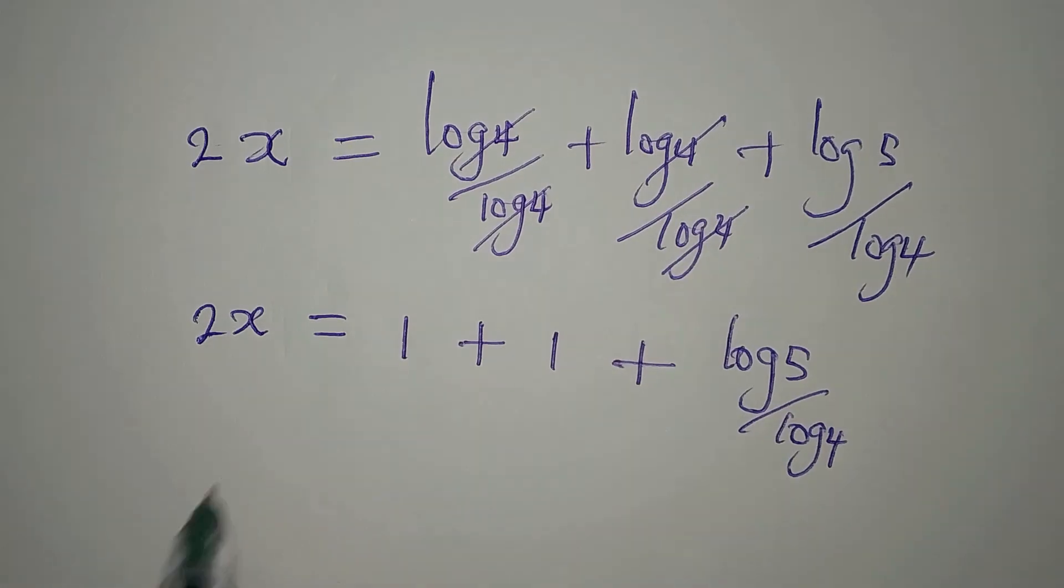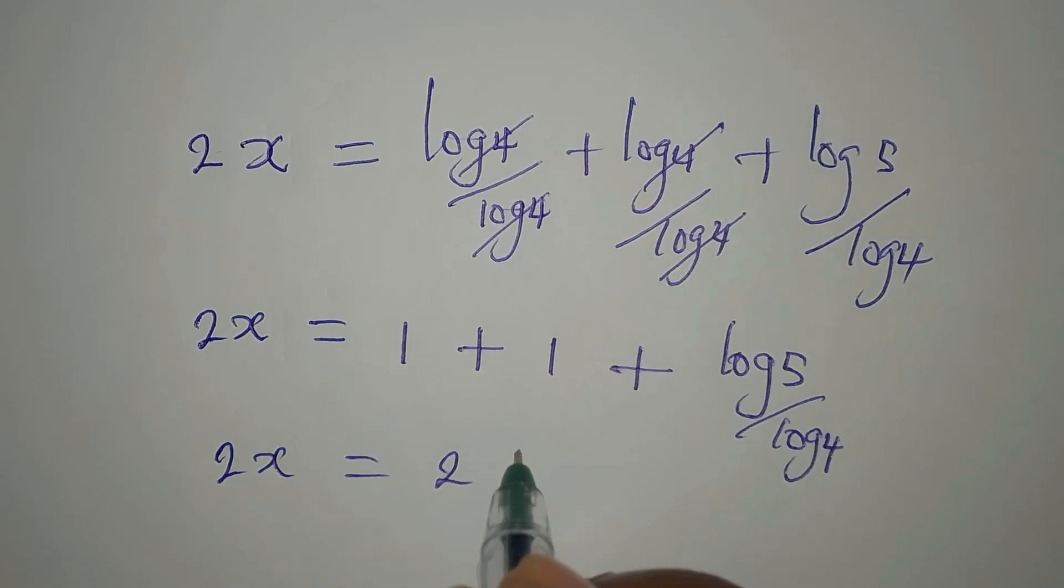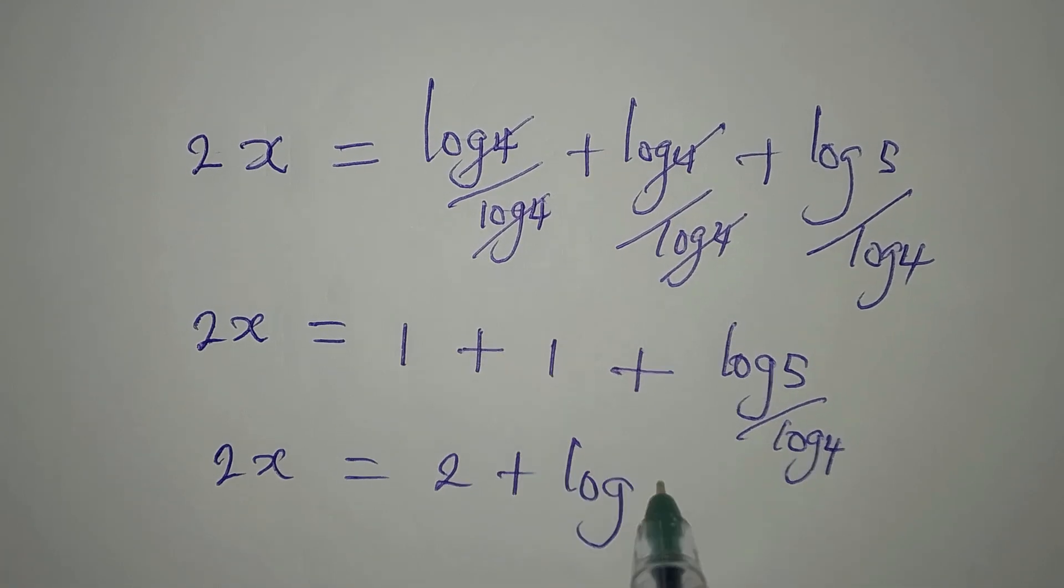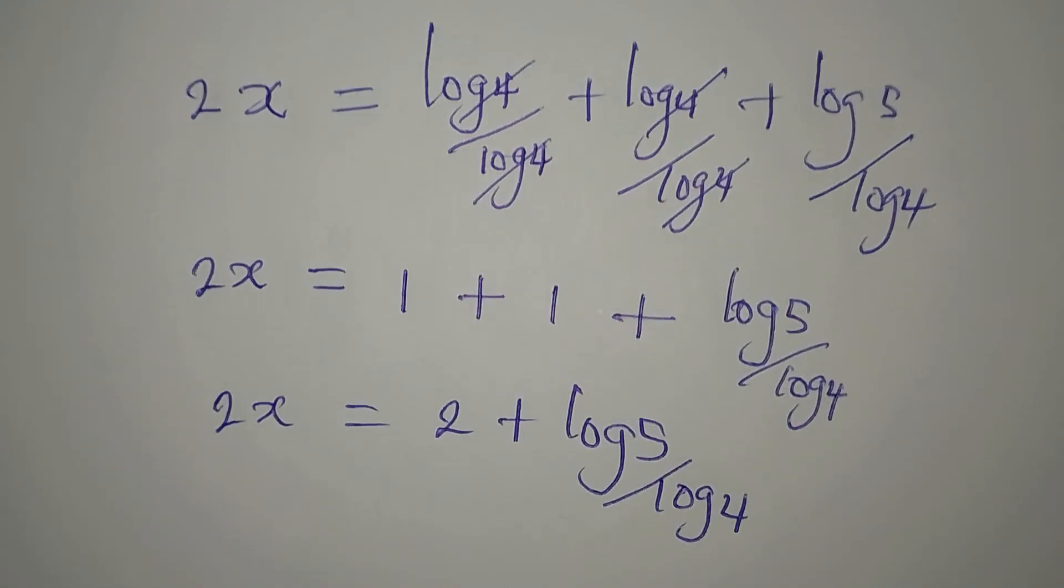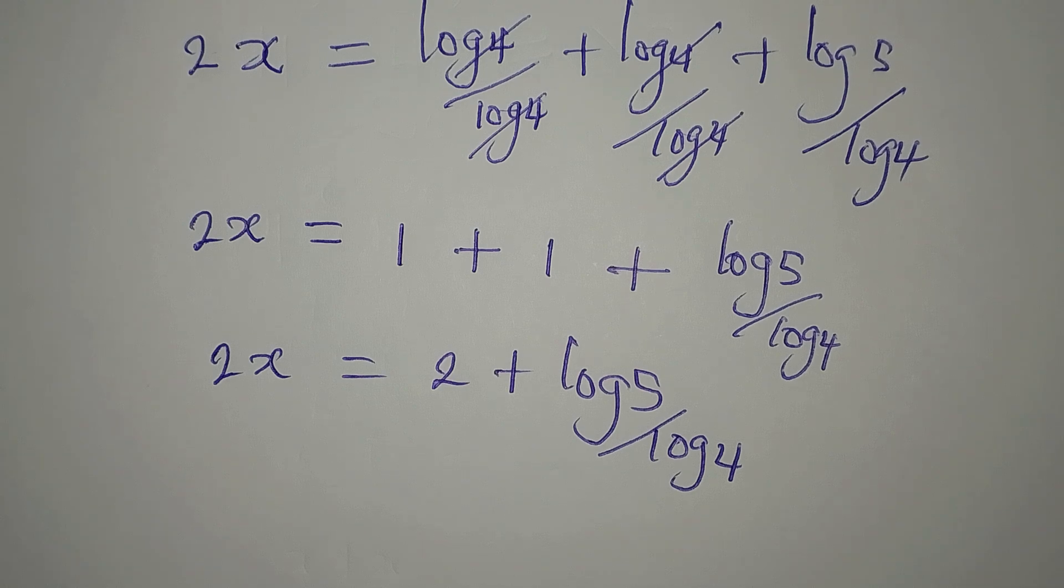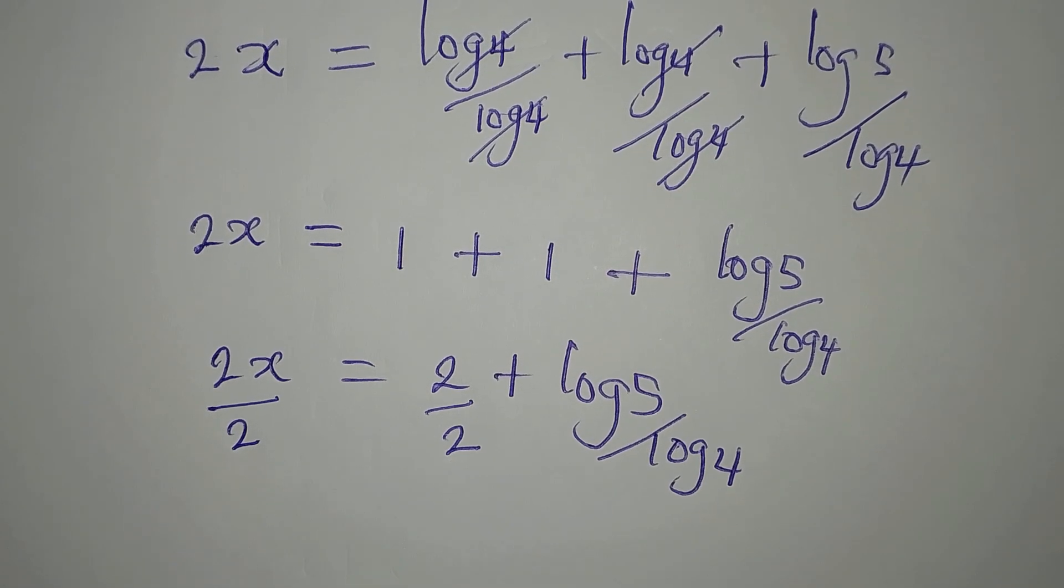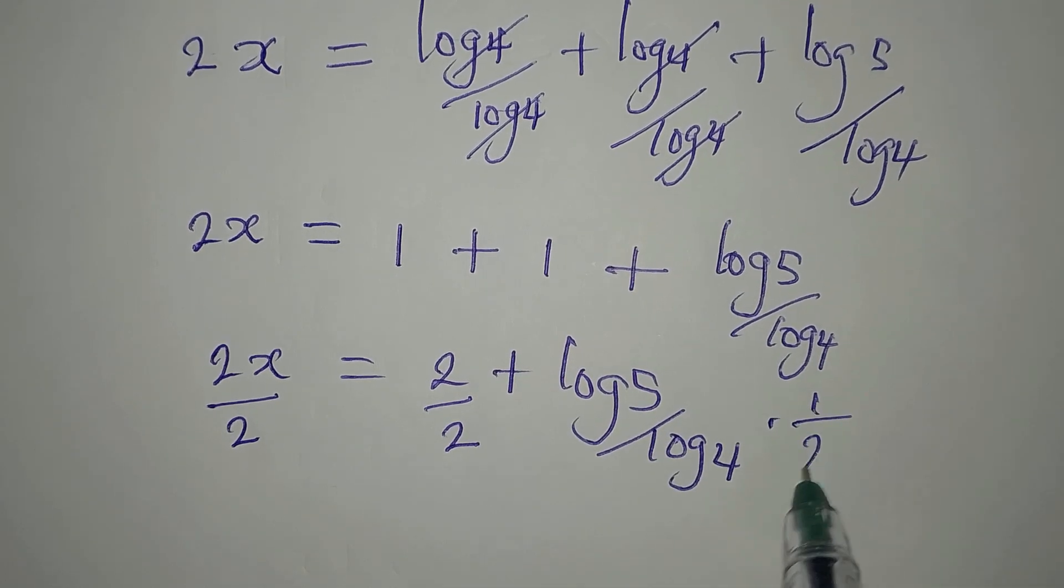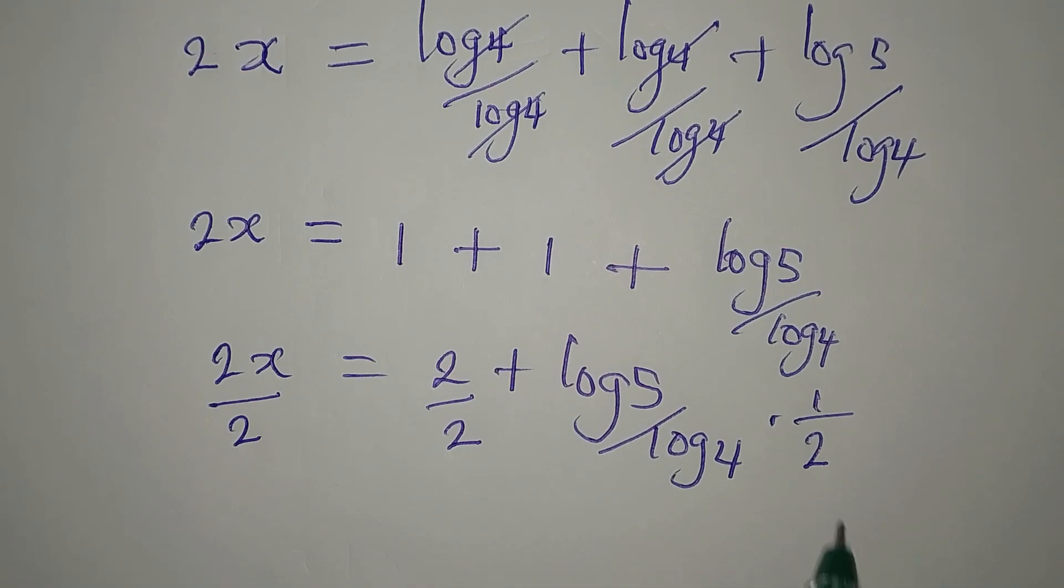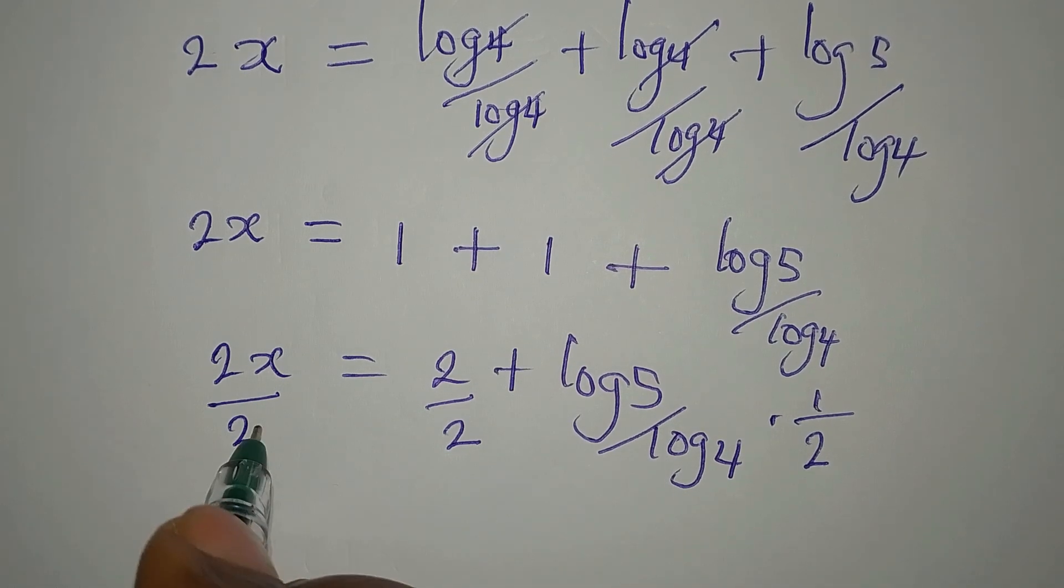Now, this means that we have 2x equals 2 plus log 5 over log 4. Mind you, we can divide all through by 2. But in this case, we multiply it by 1 over 2. You know, if you multiply any number by half, you're dividing it by 2.